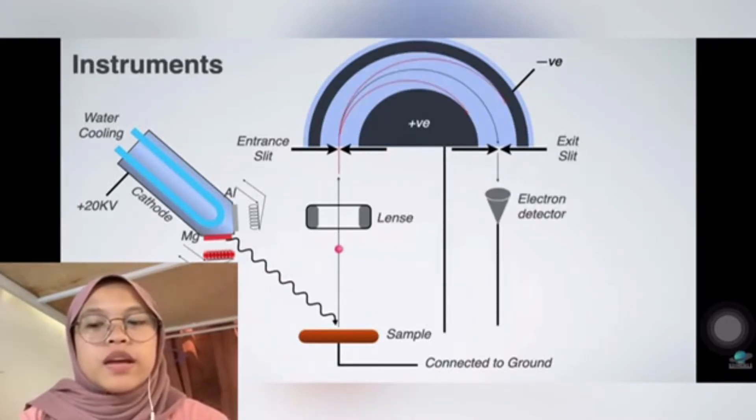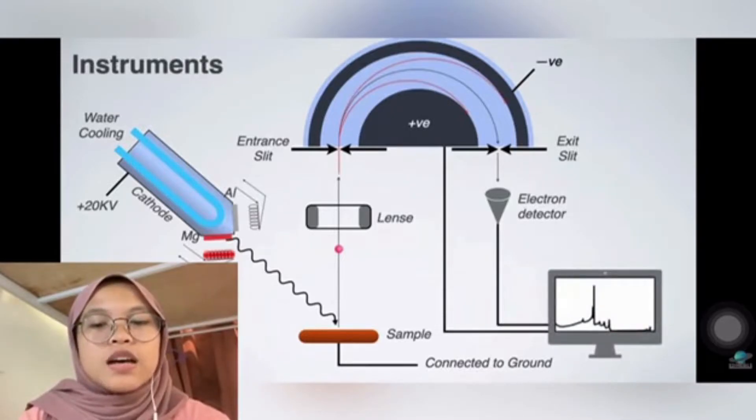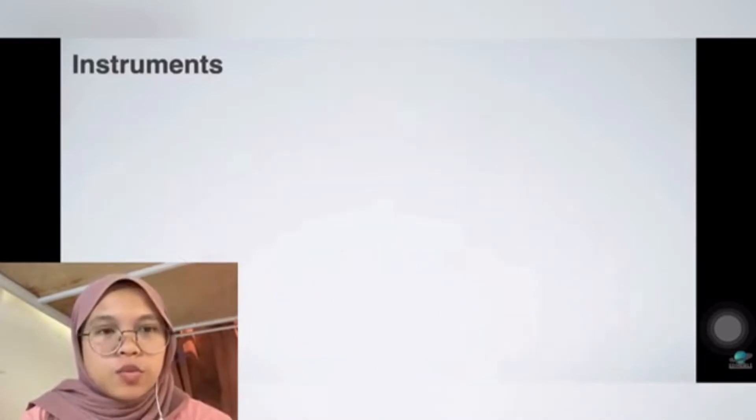To scan the electrons by kinetic energy, electrons that come out from the exit slit go to a multi-channel plate detector. Therefore, the number of electrons are counted and the kinetic energy of electrons are sent to the computer.